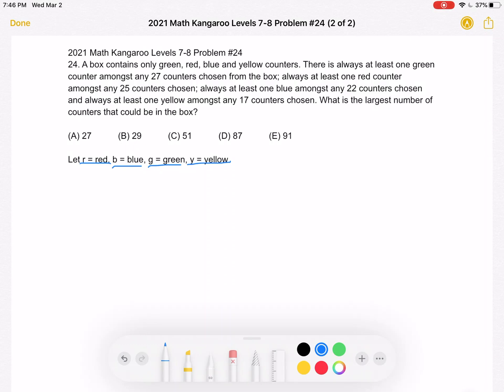The first one we have is that there is always at least one green counter among any 27 counters. So we have one green, 27 counters. That tells us that the number of red plus the number of blue plus the number of yellow counters must be less than 26 because if we choose 27, we'll definitely have at least one green.